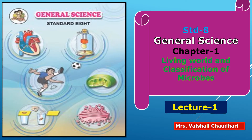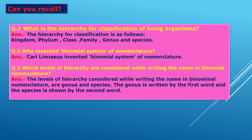Good morning, dear children. Today we are going to see chapter number one of general science, that is 'Living World and Classification of Microbes.' Before starting the chapter, we will recall some question answers from standard seven. What is the hierarchy for classification of living organisms? The hierarchy classification means a system of grouping things according to their levels and orders. In this hierarchy we consider kingdom, phylum, class, family, genus, and species.